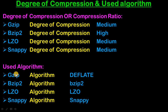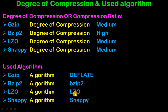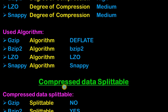Now let's look at the algorithm used by each compression technique. Gzip uses the Deflate algorithm. Bzip2 uses the Bzip2 algorithm. LZO uses the LZO algorithm. And Snappy uses the Snappy algorithm.